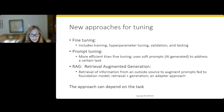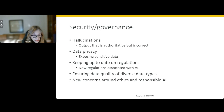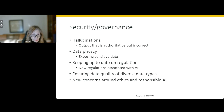Those are some of the components: the foundation model, how you're going to give it data about your company, and how you're going to represent that data potentially as vector embeddings. Finally, I want to bring up security and governance issues, which are really important components of all data and analytics projects — generative AI is no exception. We talked about hallucinations — how do you put governance in place for those? There's also data privacy in terms of exposing sensitive data. You're going to have to keep up to date on new regulations associated with AI.